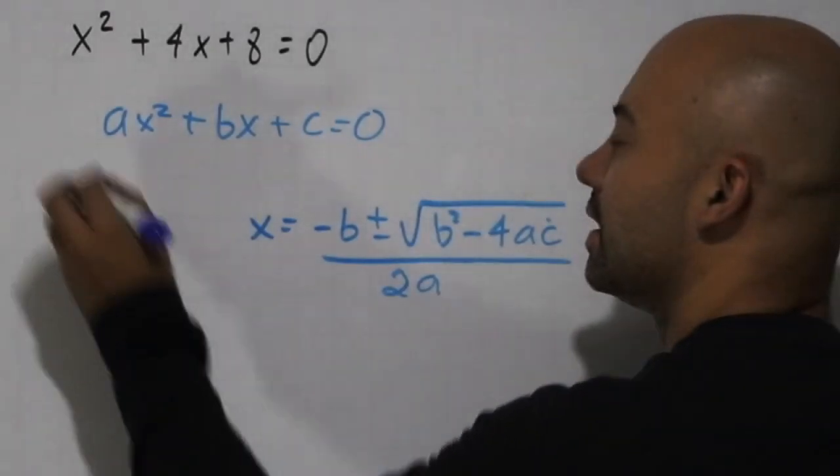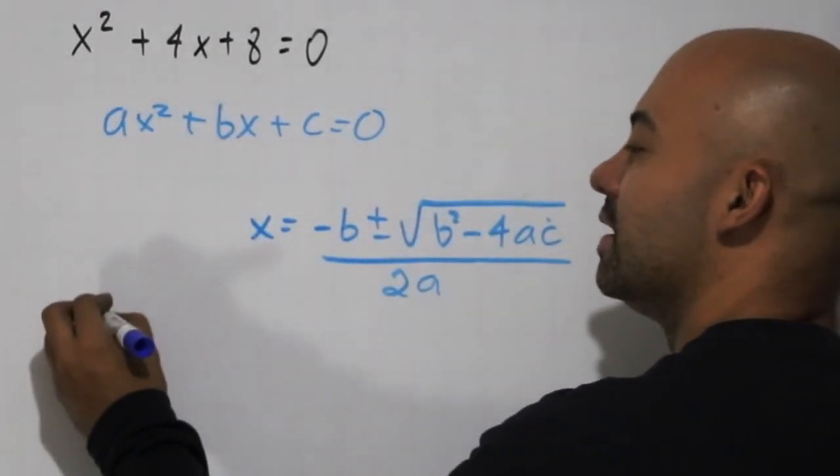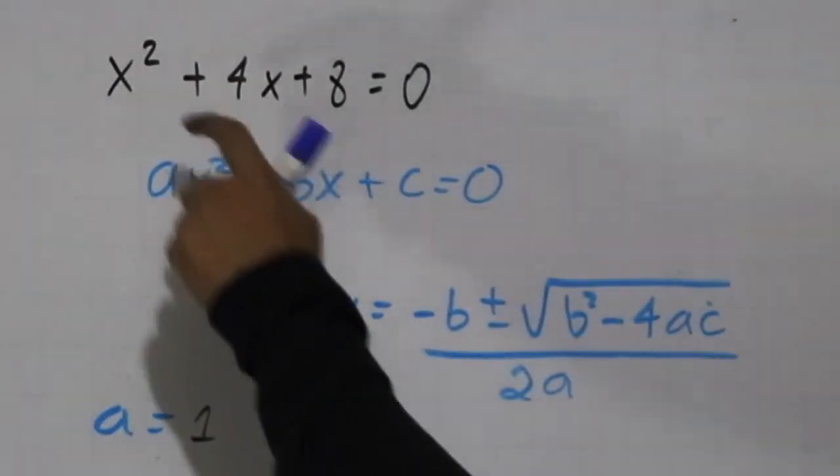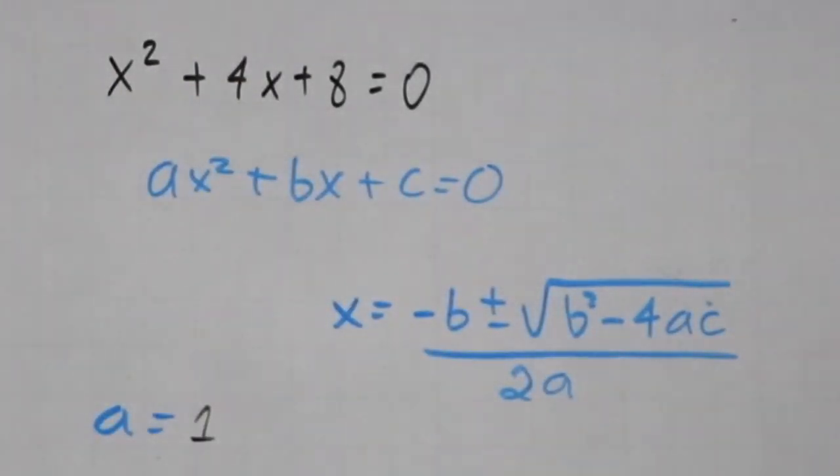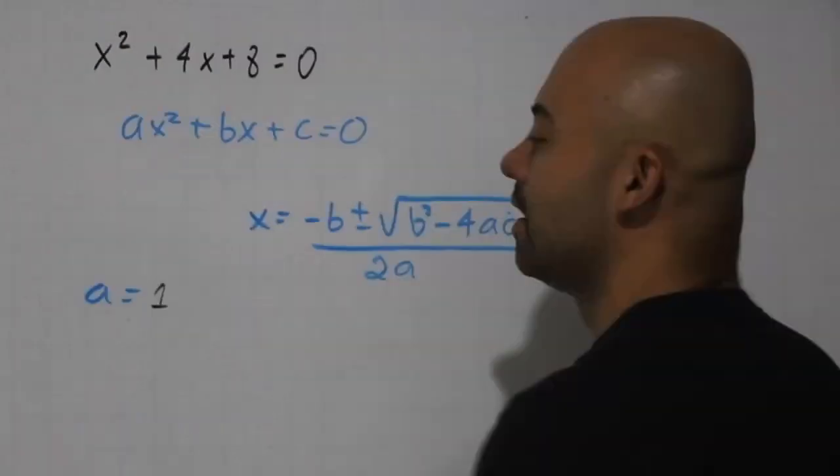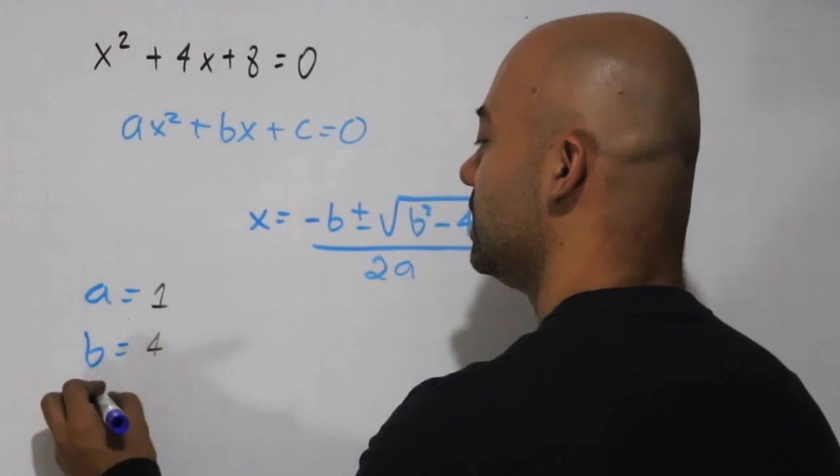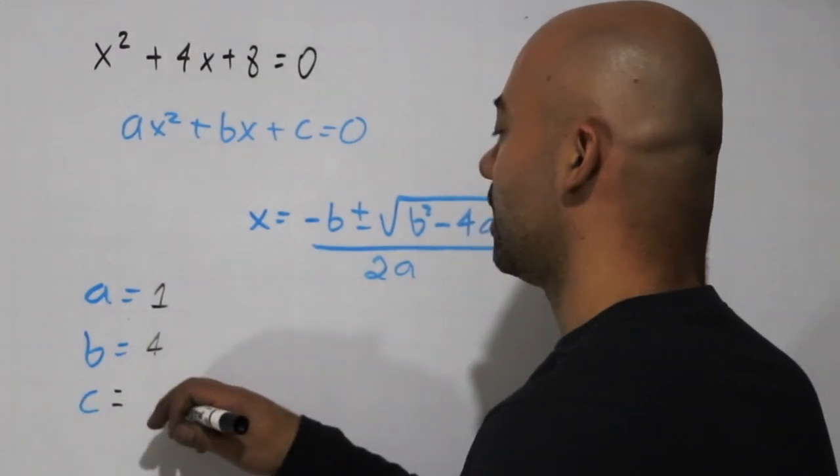As I said before, we have the equation already in the order that we needed, so a is going to be the number 1. If you see nothing next to the x², you suppose that there's a number 1 there. b, that's the number 4, and c, that's the number 8.